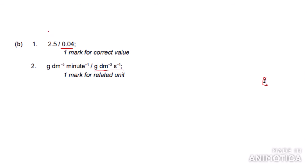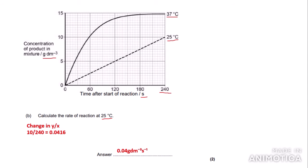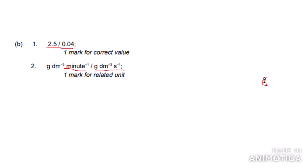Notice that another acceptable answer is 2.5. If you convert the rate per second to per minute — since there are 60 seconds in one minute — you multiply 0.04 by 60 to get approximately 2.5 grams per decimetre cubed per minute. It doesn't matter which answer you put, because the mark scheme shows a slash, so you can put either one to get the marks.